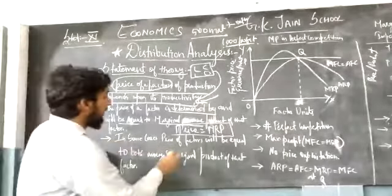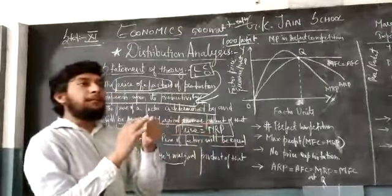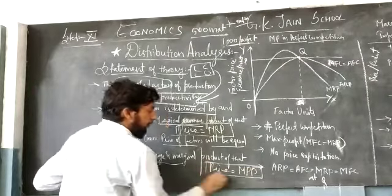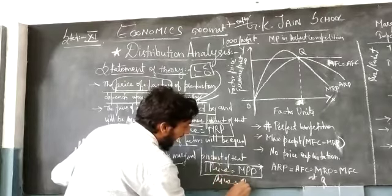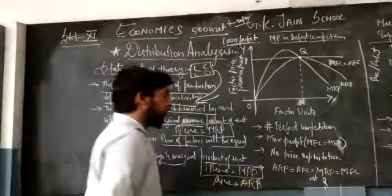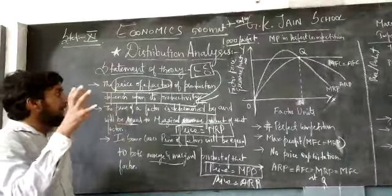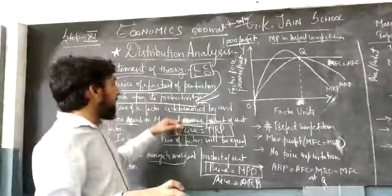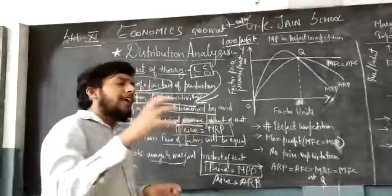In some cases, the price of factors will be equal to both average and marginal revenue product. In many cases, price will be equal to MRP — this should be the ideal one to have maximum satisfaction. But also, we can have that price is equal to average revenue product (ARP). So price is equal to MRP and price is also equal to ARP. The three aspects are: the price of the factor fully depends upon productivity; to determine the price we need marginal revenue; and it should be equal to marginal revenue, or in many cases equal to average as well as marginal revenue.